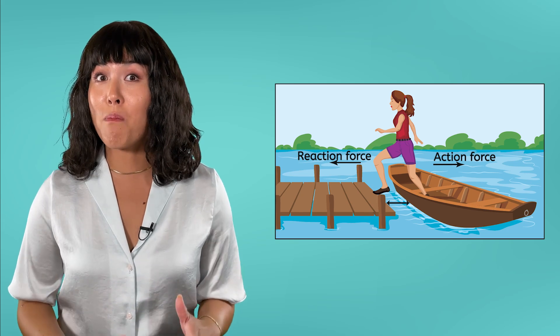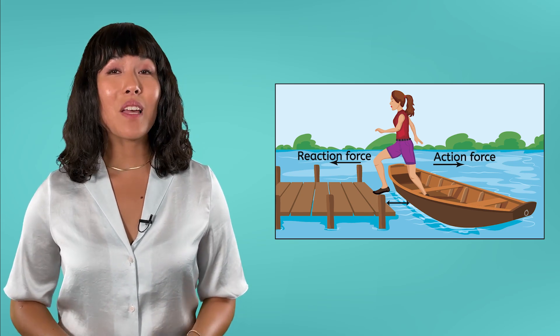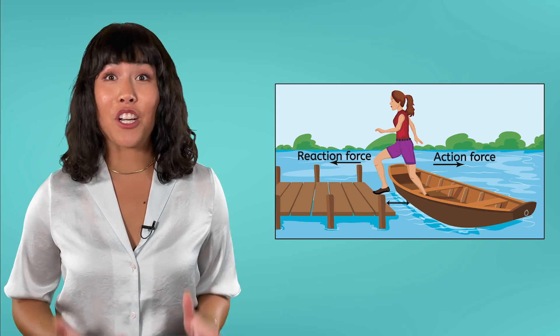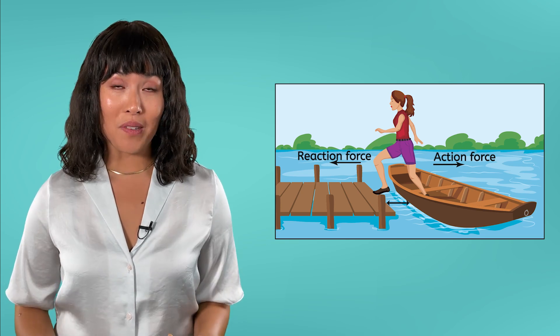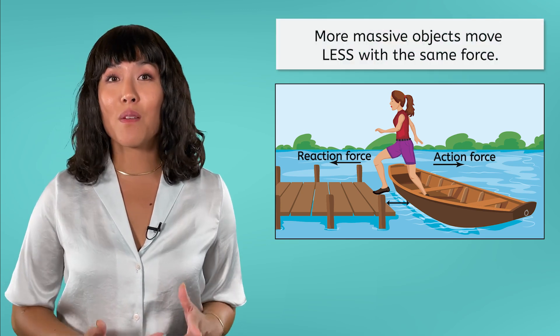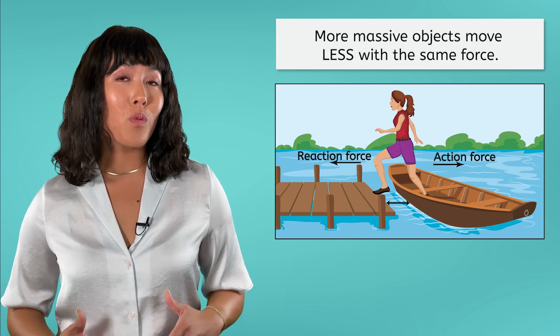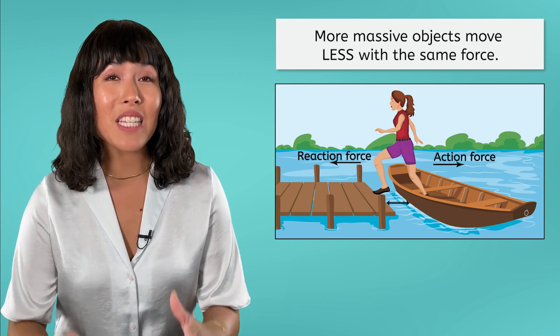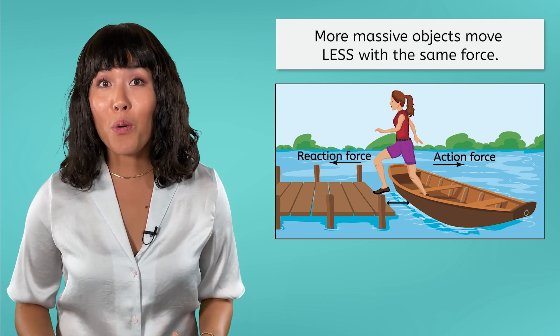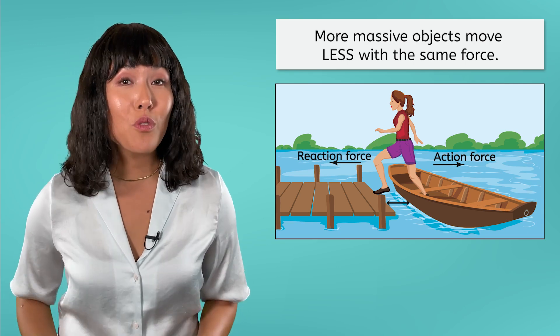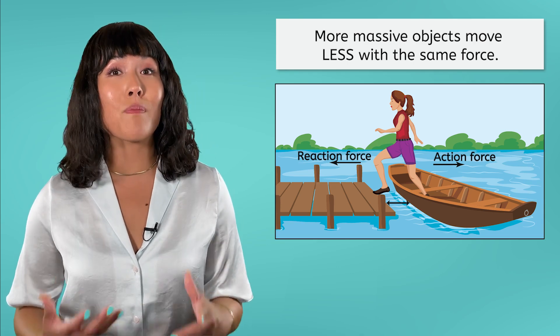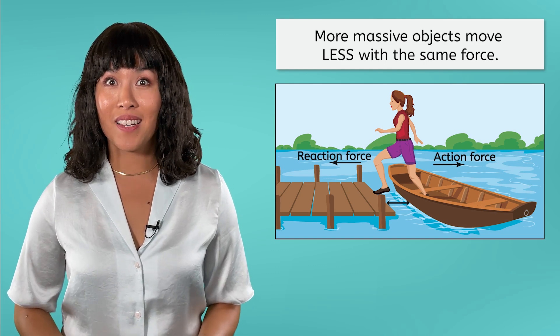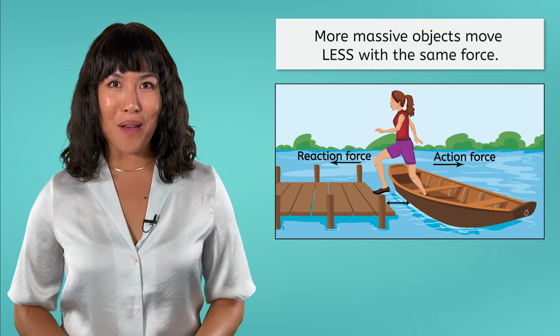As a result of these forces, which object moves more? In cases involving a small boat, such as a canoe, the boat moves more. If you have more mass than the boat, you may only move forward a foot or so, just enough to get onto the dock. But the boat may accelerate backwards several feet, because its smaller mass responds more dramatically to the same force. Okay, one more example.